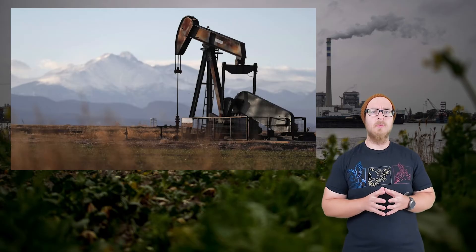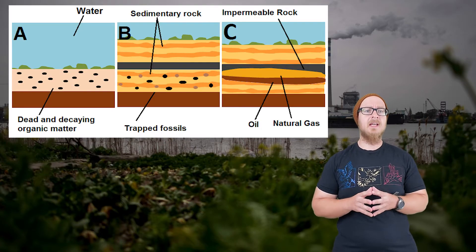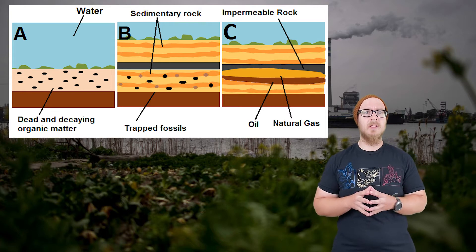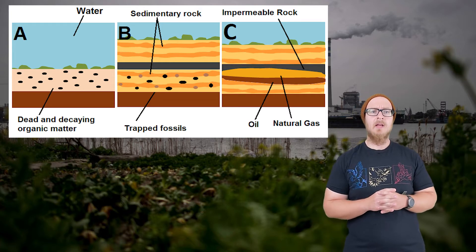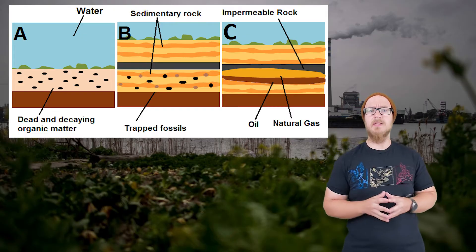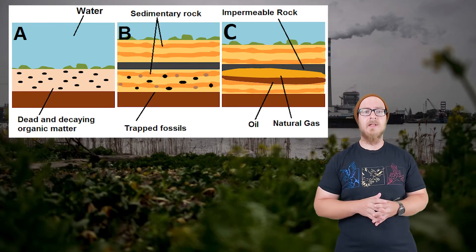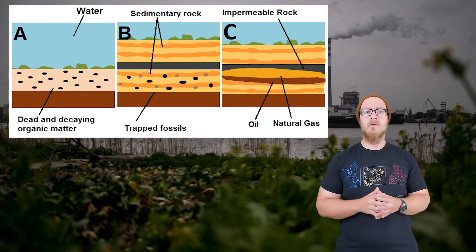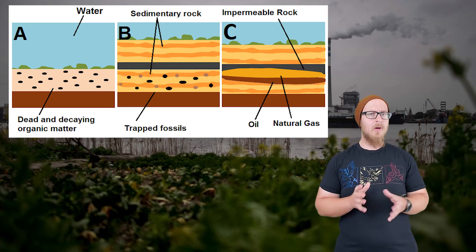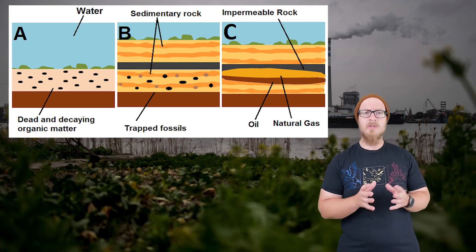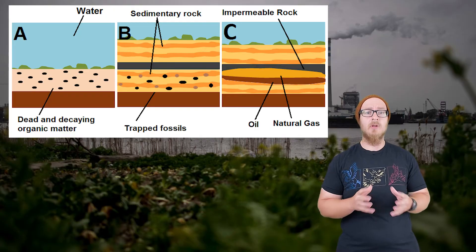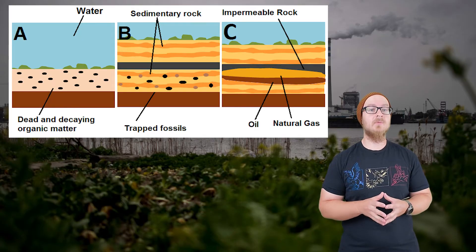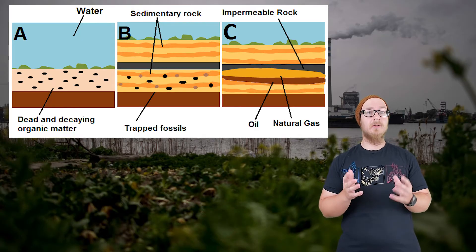Another fossil fuel we use is oil. The formation of oil begins in the ocean, where dead phytoplankton and other marine organisms sink to the bottom. As these layers of phytoplankton build up along with sediments, the heat and pressure eventually convert them into oil. However, because more decomposition continues, oil is commonly found alongside natural gas, which is primarily methane.